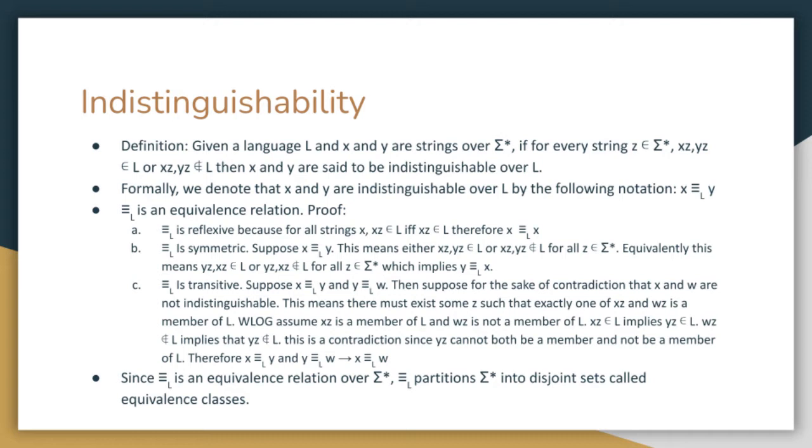Indistinguishability is an equivalence relation, which means it's reflexive, symmetric, and transitive. Most importantly, though, since it's an equivalence relationship, it partitions sigma star into disjoint sets called equivalence classes. This means that there is some number of sets of indistinguishable words over the language L, and all words coming from sigma star uniquely reside in one of these equivalence classes.